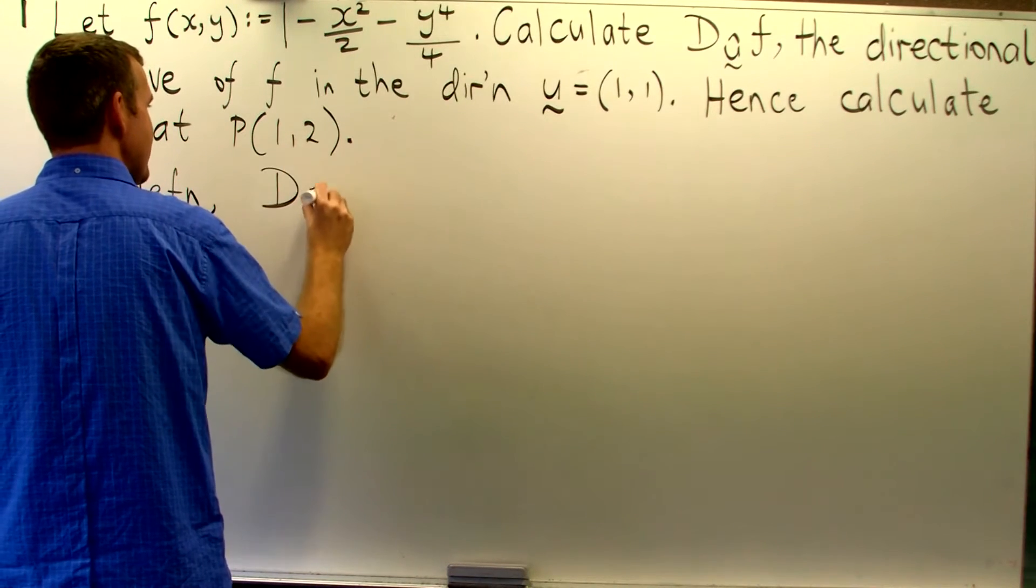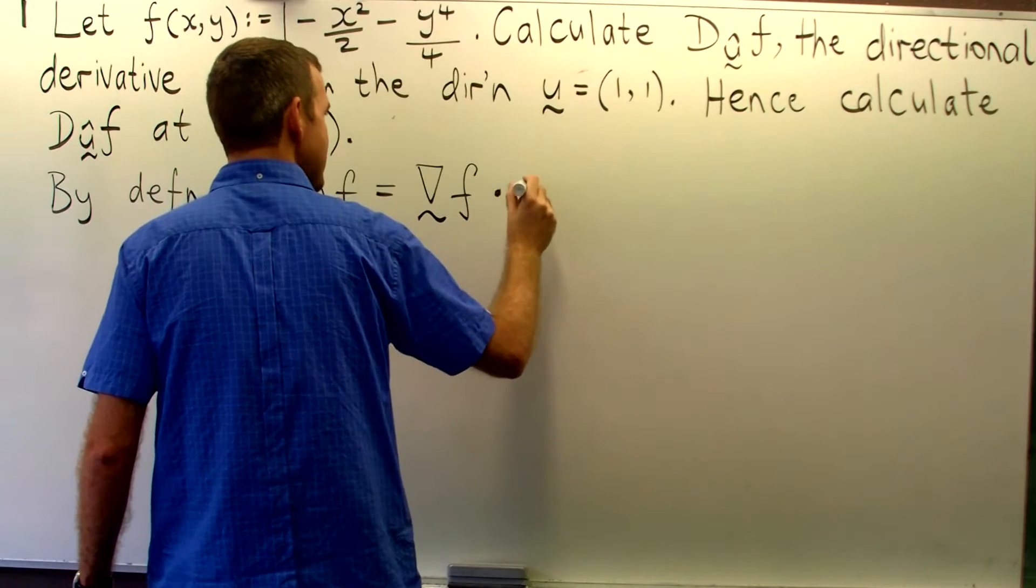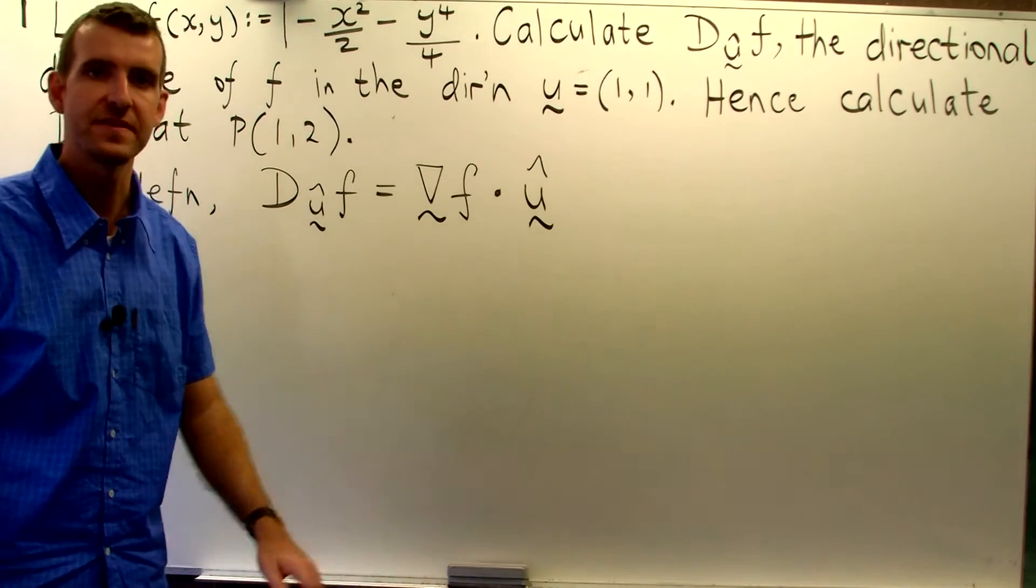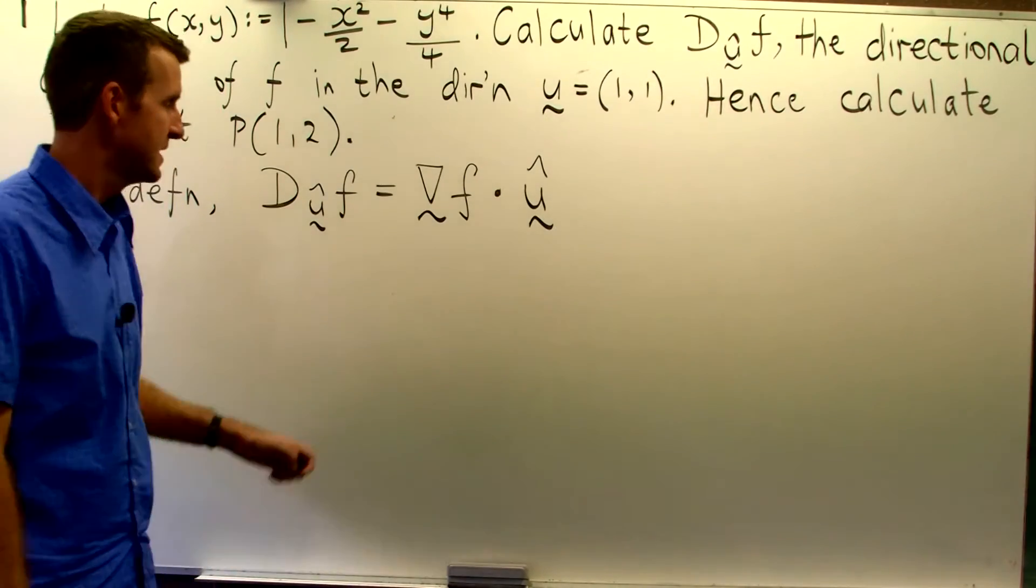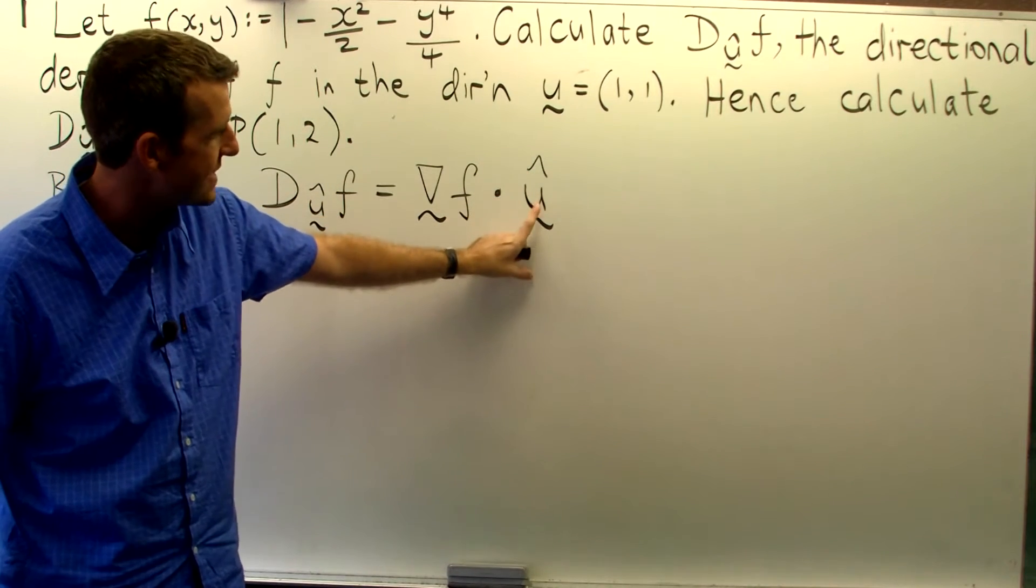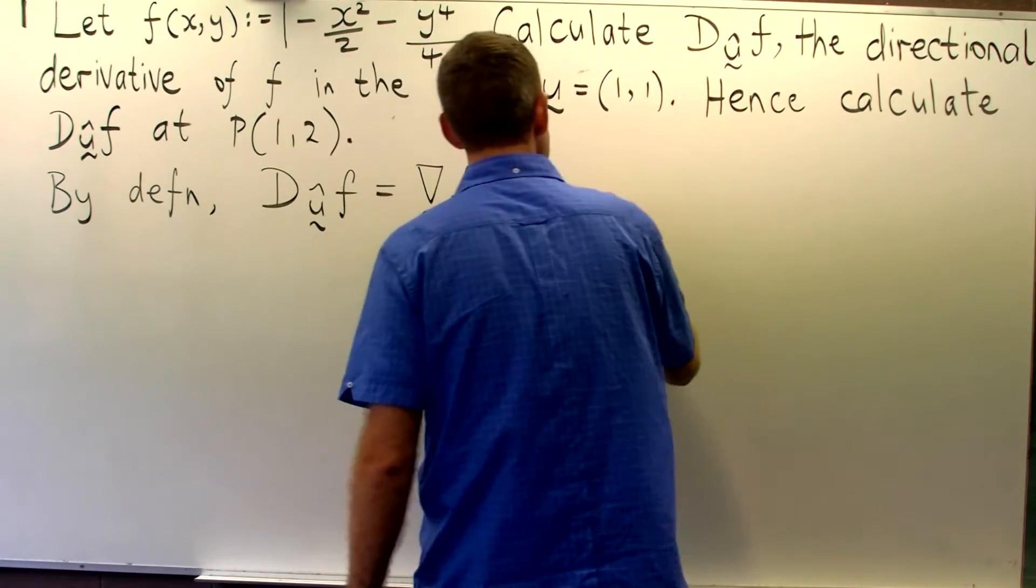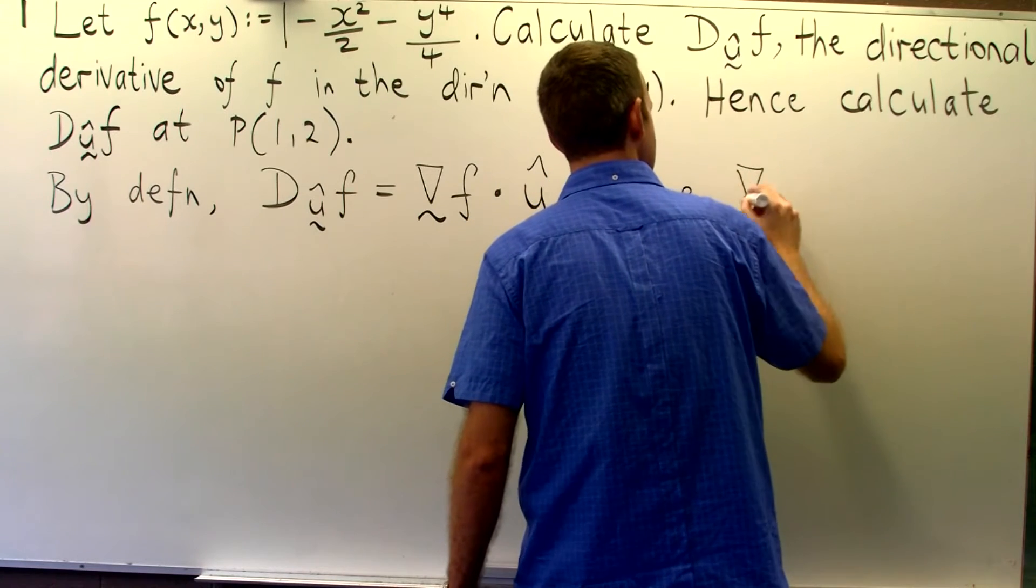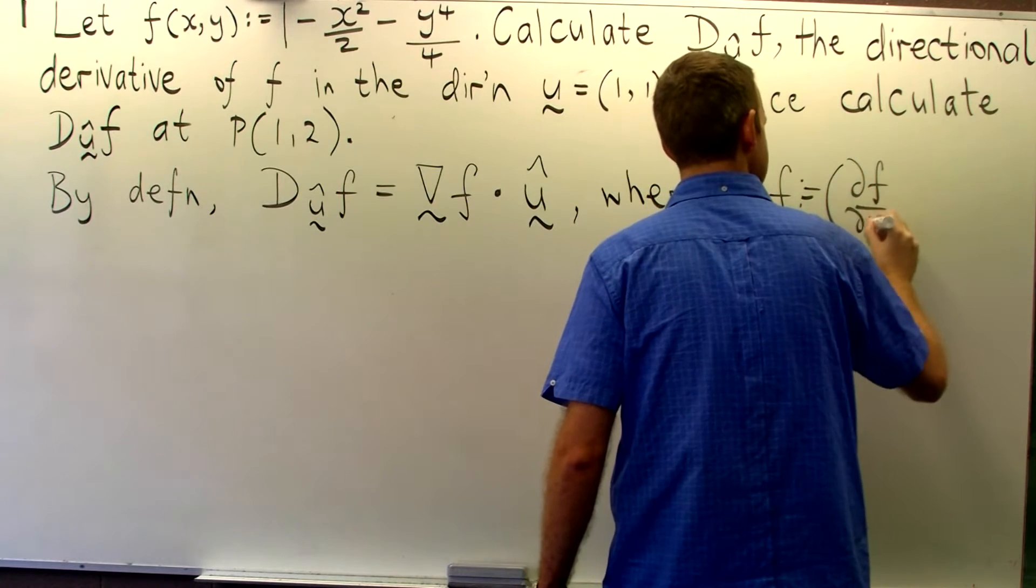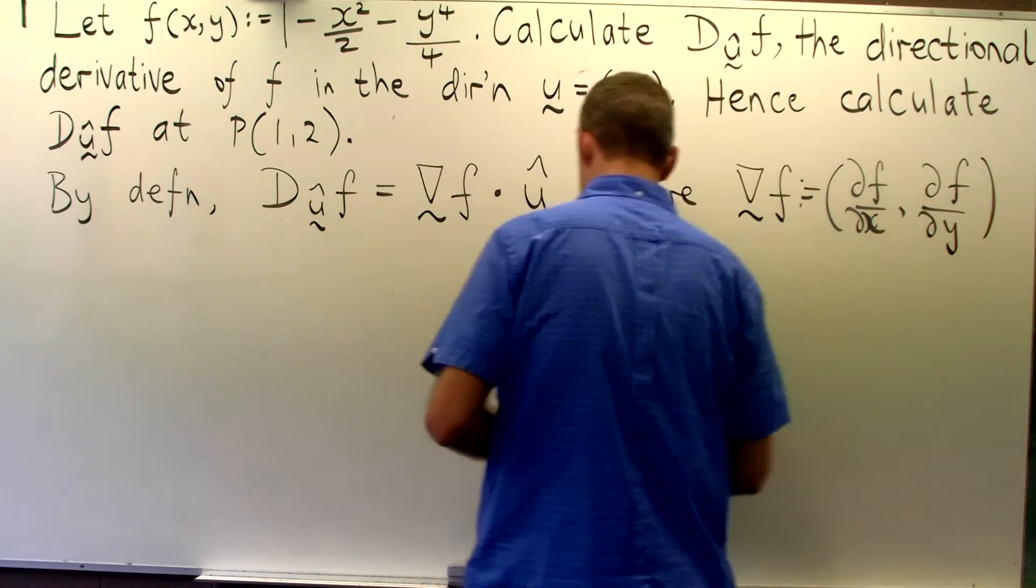our directional derivative of f in the direction of u is just the dot product. Now you can have other representations but the dot product is the easiest and probably the most effective way in computing these things. So here we have what's known as the gradient of f dotted with u hat. Now u hat is a vector that has length one, a unit vector. And this grad f is defined in the following way. It's a vector function with partial derivatives as the components.